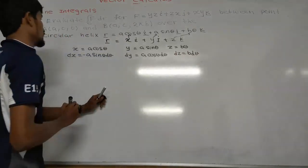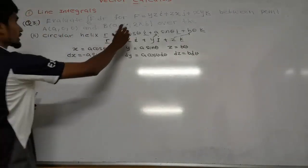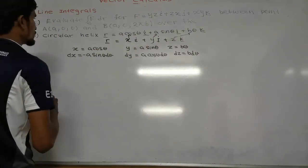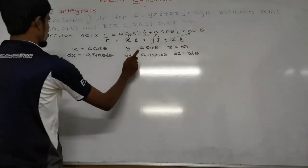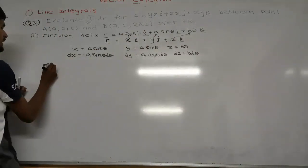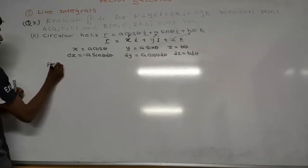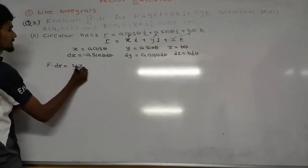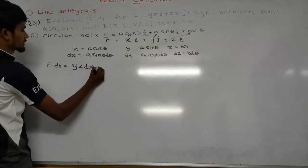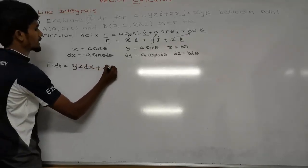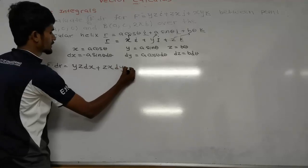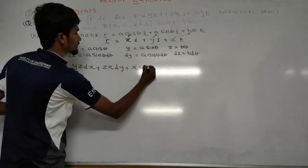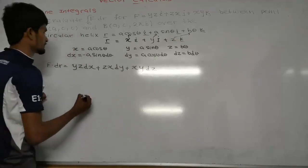So that's it, this is what we call it: FDR. We have y z dx, z x dy, y x y dz — total.